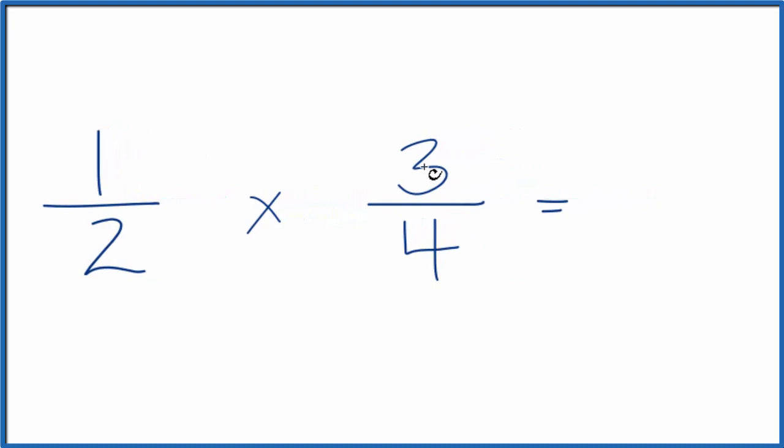So one times three, that gives us three. Two times four, that gives us eight. So one-half of three-fourths, that's three-eighths.